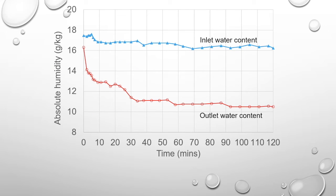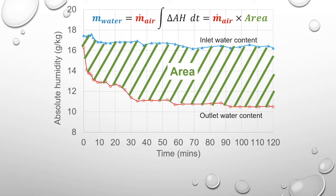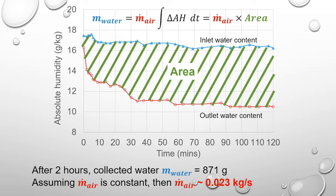Since we have measured the exact conditions of the inlet and outlet of the dehumidifier with respect to time, we can actually estimate the air flow rate based on the amount of water collected and the difference in absolute humidity of the inlet and the outlet, that is, the area between the curves. Assuming that the air flow rate is constant throughout the experiment, we can estimate it to be about 0.023 kg per second.